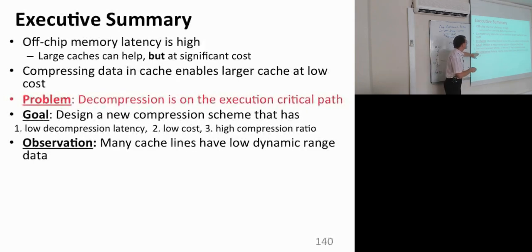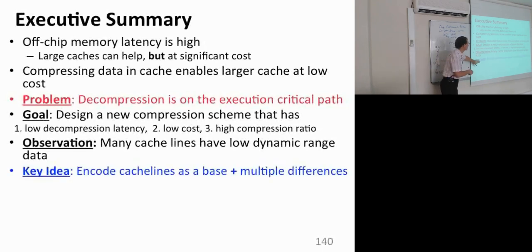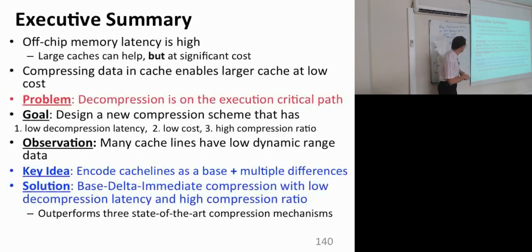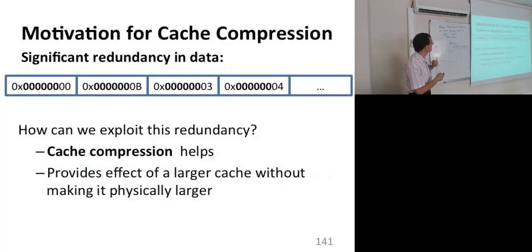The observation is that many cache blocks or cache lines have low dynamic range in the data they store. The key idea is to encode these cache lines as a single base plus multiple differences from that base. The solution is Base-Delta-Immediate compression, which has low decompression latency and high compression ratio. It outperforms three state-of-the-art compression mechanisms that are not employed in caches because of their complexity and compression latency.